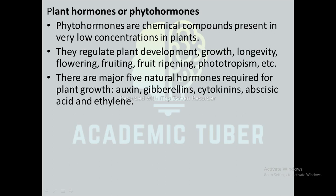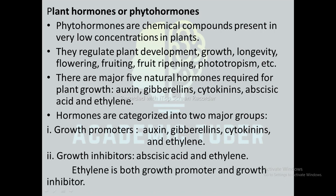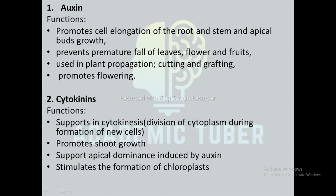There are five major natural hormones required for plant growth: auxin, gibberellin, cytokinin, abscisic acid, and ethylene. Hormones are categorized into two major groups: growth promoters and growth inhibitors. Growth promoters include auxin, gibberellin, cytokinin, and ethylene, whereas growth inhibitors include abscisic acid and ethylene. Ethylene is both a growth promoter and a growth inhibitor. Functions of auxins: they promote cell elongation of the root and stem and apical growth, prevent premature fall of leaves, flowers, and fruits, are used in plant propagation such as cutting and grafting, and also promote flowering.